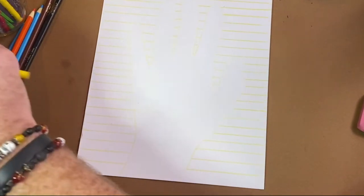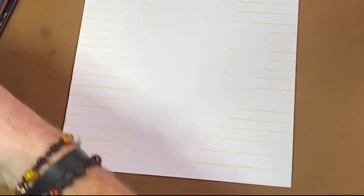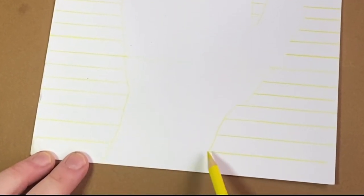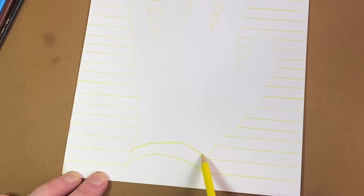So once everywhere outside the hand is filled with horizontal lines, we're going to add curved lines on the inside of the hand. And this is going to give us the sense that it is popping up off of the paper.